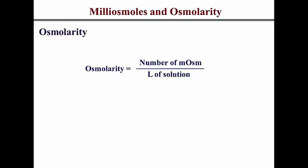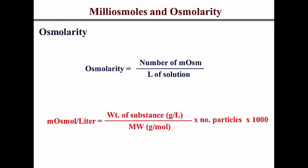In determining osmolarity, we use milliosmoles per liter, which is a concentration. This can be determined using the equation where you have the weight of the substance — importantly in grams per liter. At any point in time, you want to be sure your concentration is in grams per liter, otherwise this equation won't work. You also multiply by the number of particles and a factor of one thousand.